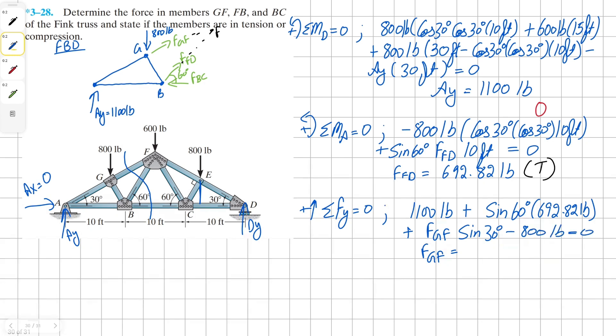And now when we solve for GF, we get our solution as 1,800 pounds. And it's in negative. This means we assumed our vector in the wrong direction. Switching our vector sign would get us positive solution. And this also tells us that our member is in compression.